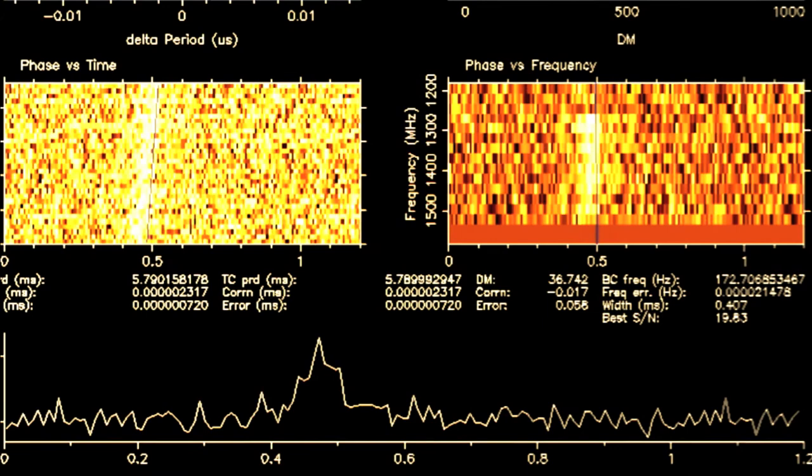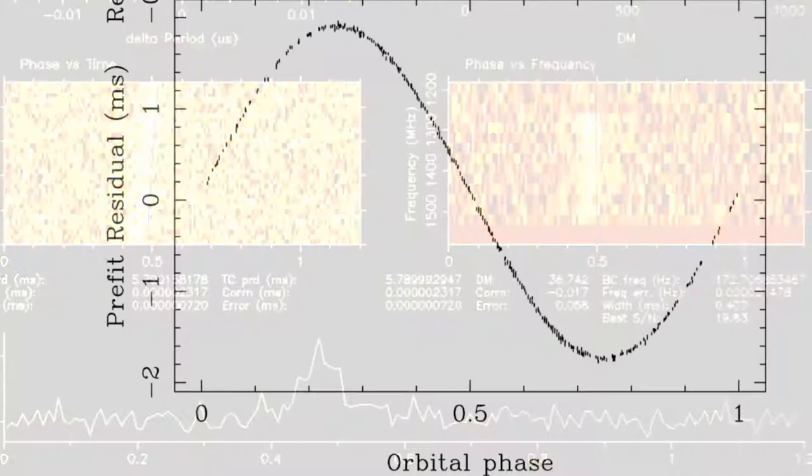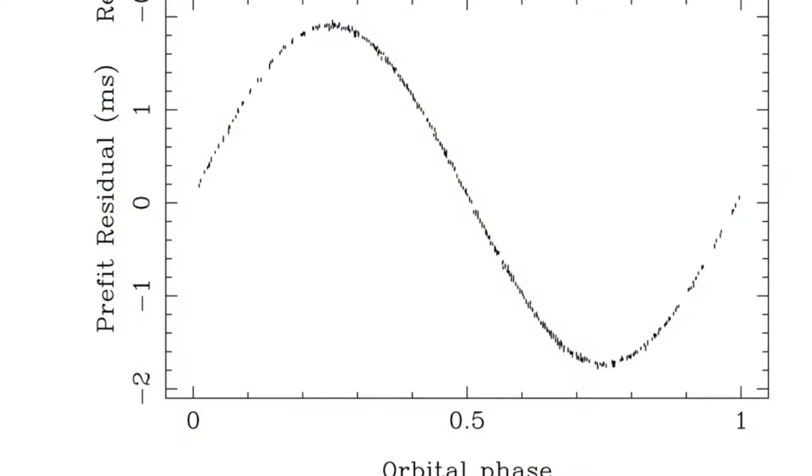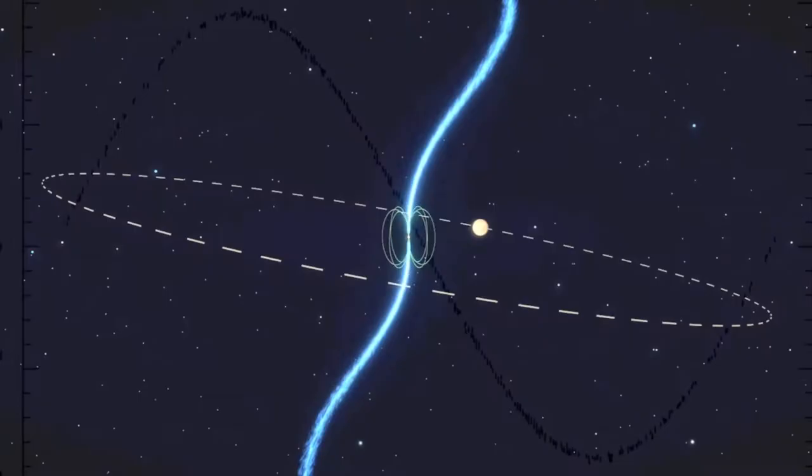In 2009 a 5.7 millisecond pulsar was discovered on our supercomputers and our colleagues at Jodrell Bank soon realized that this star was orbiting another object every two hours.